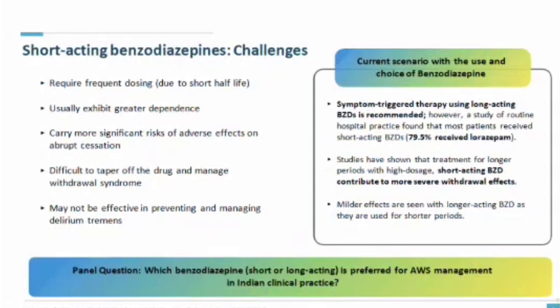There are challenges with short-acting benzodiazepines. They require frequent dosing due to their shorter half-life, exhibit greater propensity for dependence, carry more significant risk of adverse effects including abrupt cessation issues, are difficult to taper off, and may not be effective in preventing or managing delirium tremens. Current evidence shows symptom-triggered therapy using long-acting benzodiazepines is most recommended, yet studies find most patients receive short-acting benzodiazepines, contributing to more severe withdrawal effects.